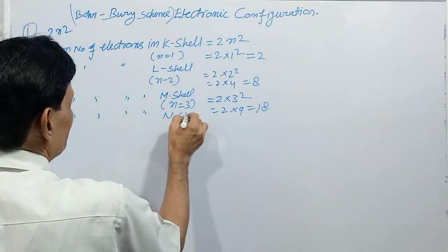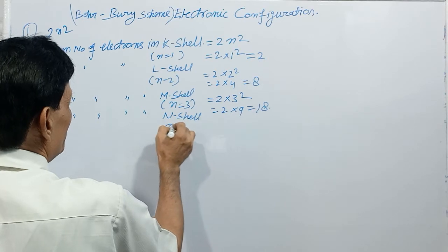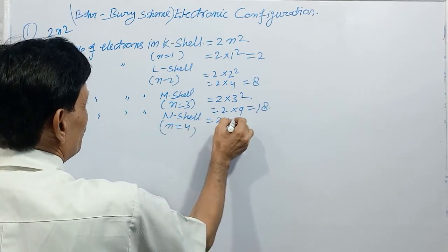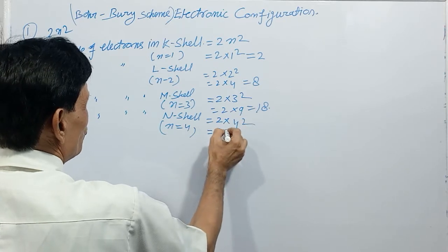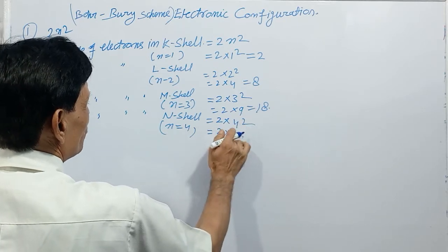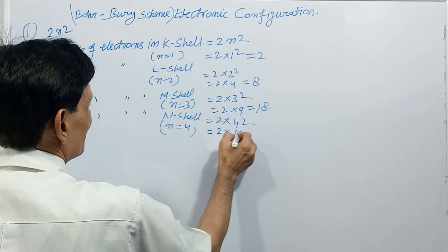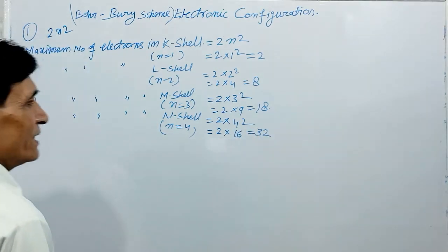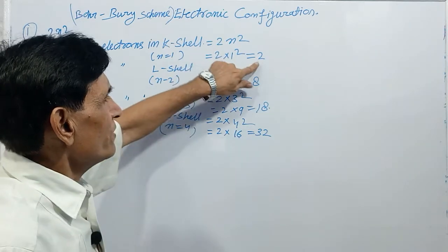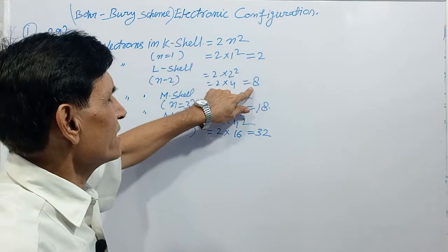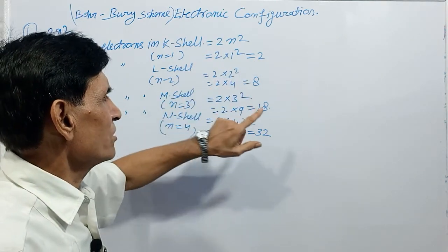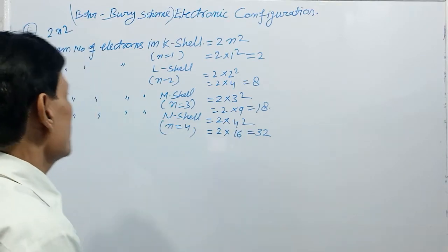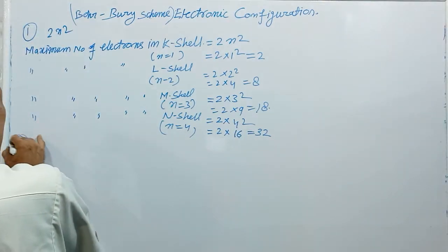For the fourth shell, N shell: n = 4, so 2 × 4² = 2 × 16 = 32 electrons. Therefore: the first shell cannot have more than 2, the second cannot have more than 8, the third cannot have more than 18, and the fourth cannot have more than 32.